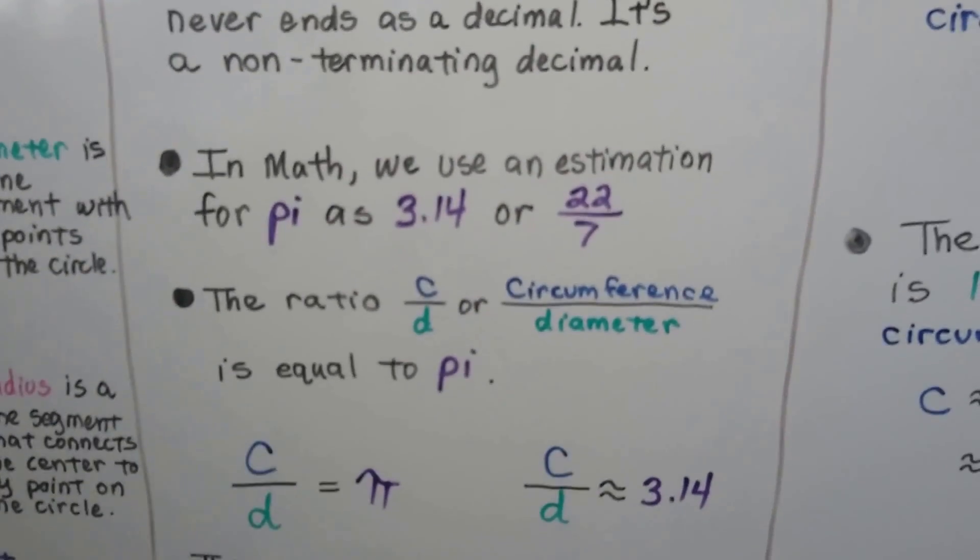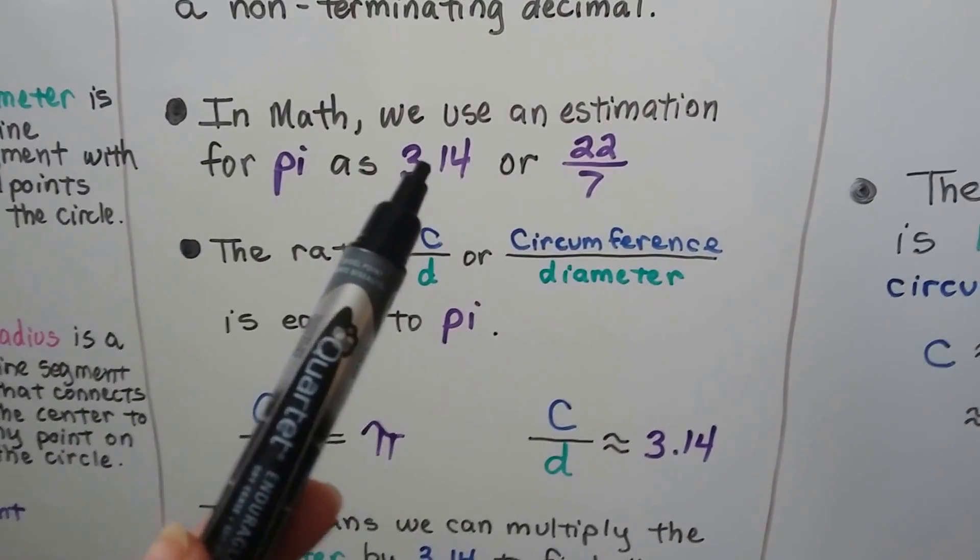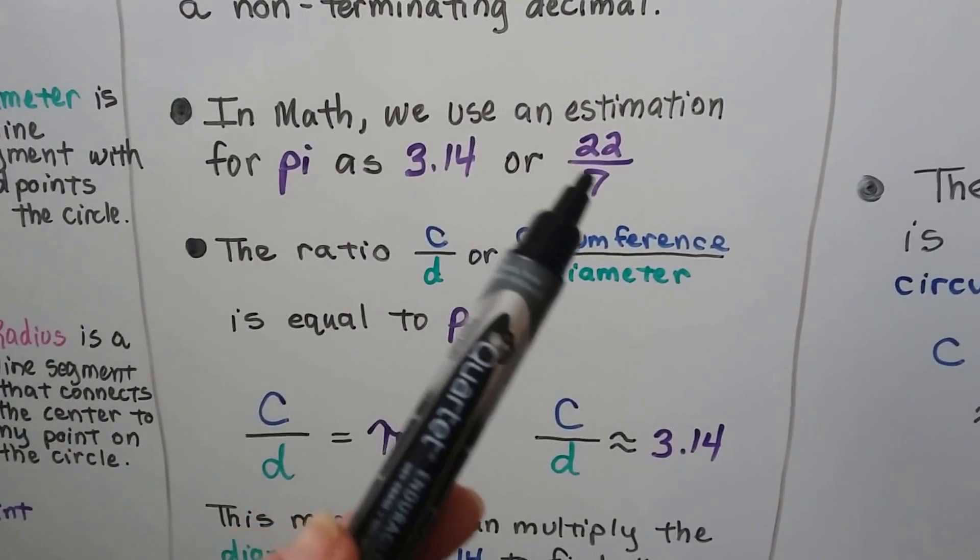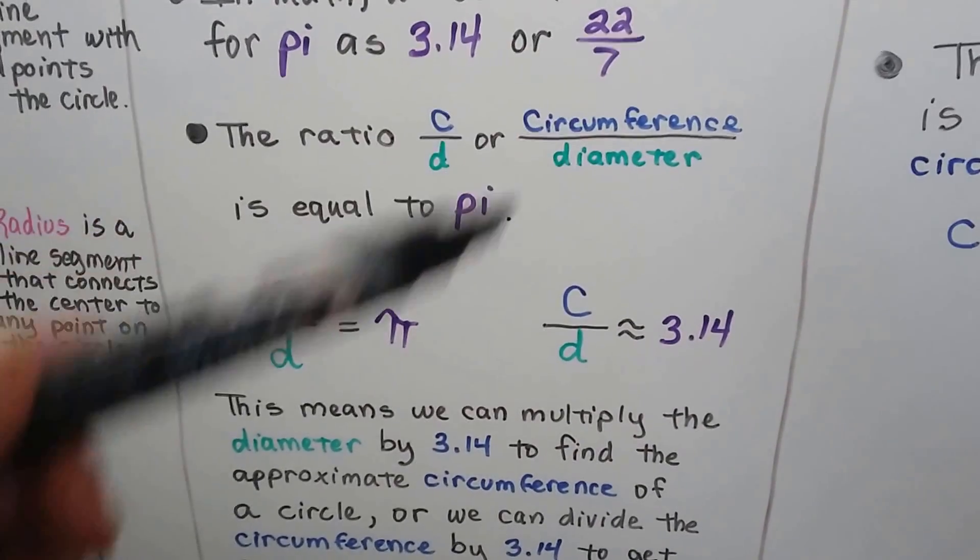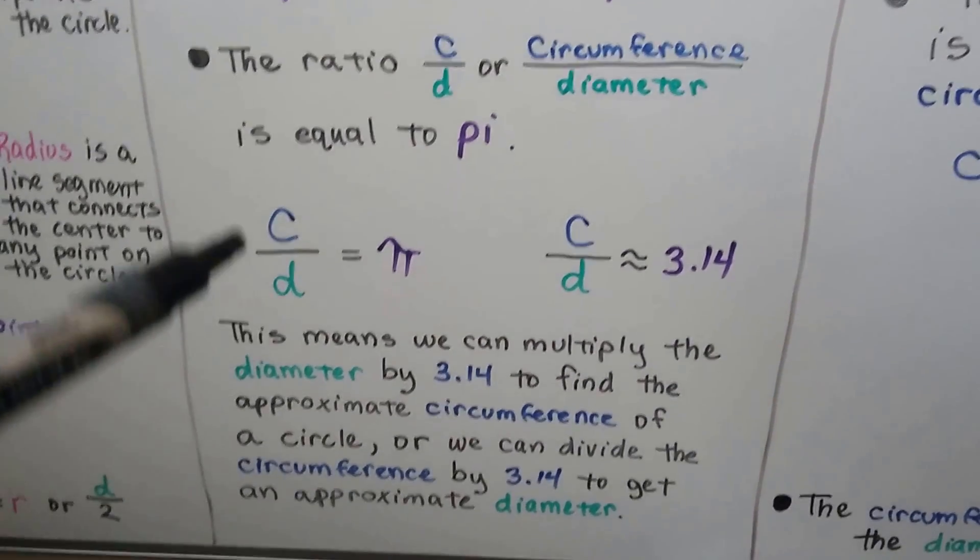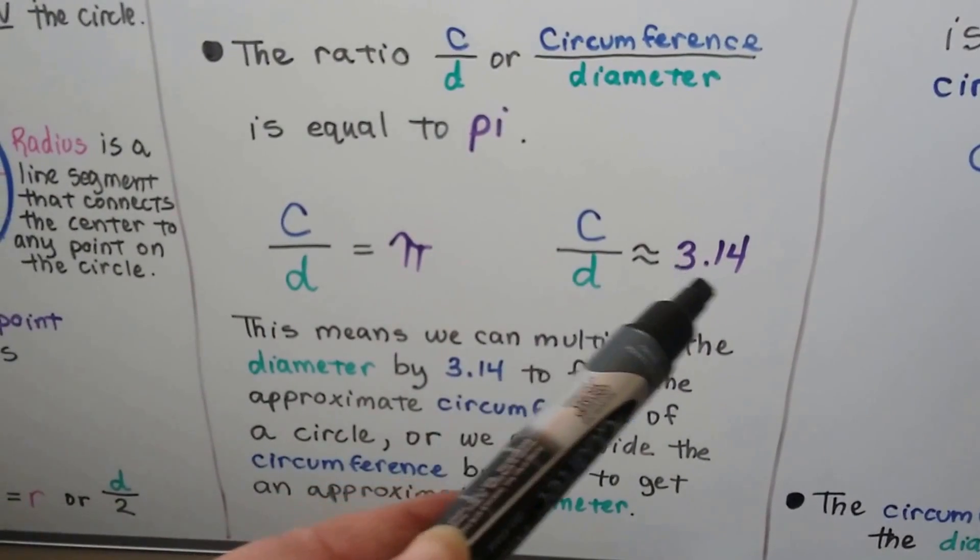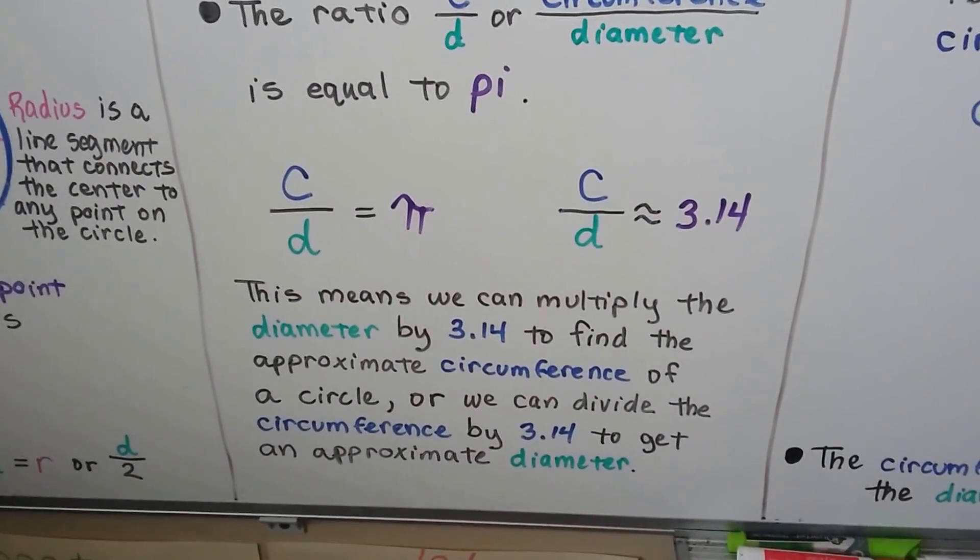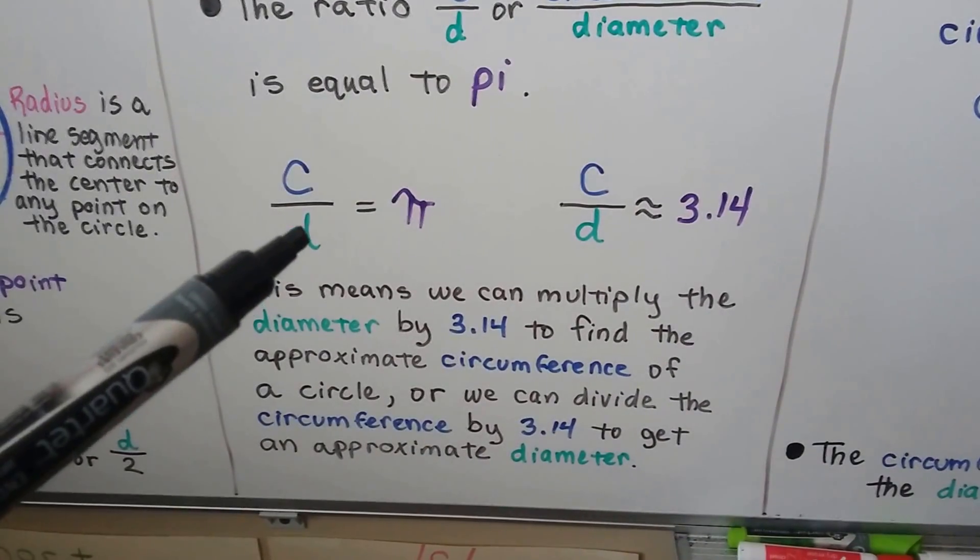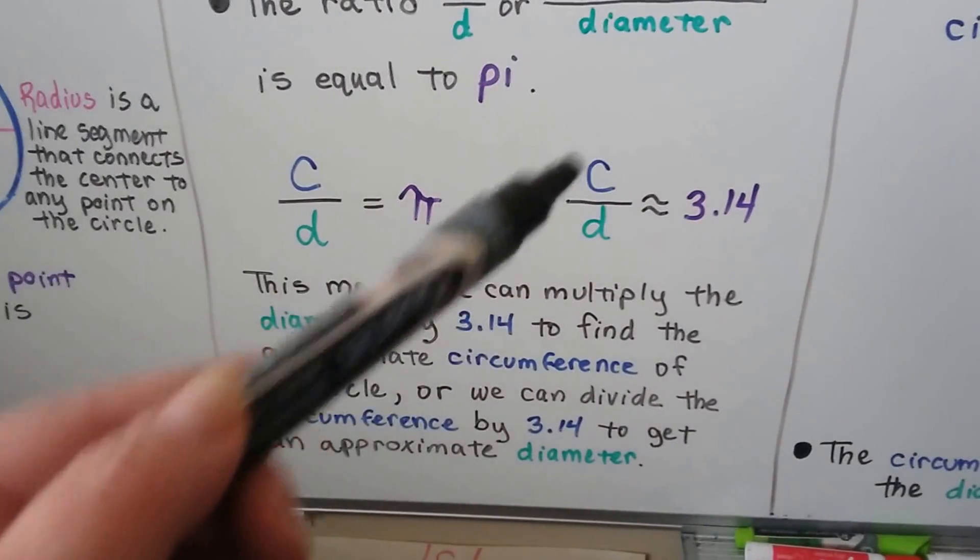In math, we use an estimation for pi as 3.14, because we can't use all the digits. We also use 22 sevenths as a fraction. And that ratio c over d, or circumference over diameter is equal to pi. So we can say it's approximately equal to 3.14, because we're not using all of pi's digits. And this means that we can multiply the diameter by 3.14 to find the circumference.